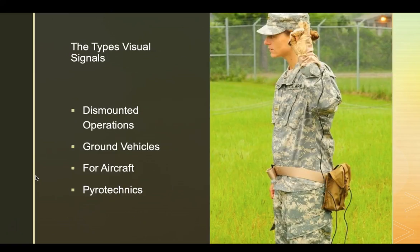The types of visual signals. What we'll be using in ROTC is dismounted operations. This is where we're in the field, we're carrying, we're rucking. There's ground vehicles, which would be like the LMTVs and Humvees. Aircraft, which would be like the Blackhawks and other aircraft that we're using for our missions. Pyrotechnics is with fire and explosives and that kind of stuff.